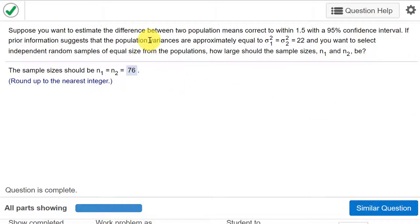We're given this information: we want to estimate the difference between two population means correct within 1.5 with a 95 percent confidence interval. You have to interpret that 1.5 as your margin of error, but we want the width if we're going to use StatCrunch and I'll show you that.